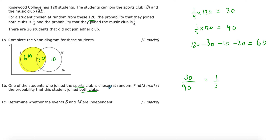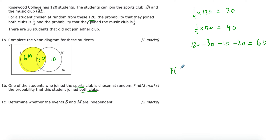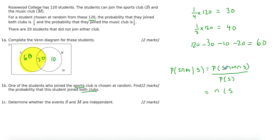So the probability is 30 divided by 90, which simplifies to a third. Another way to think about this is as a conditional probability, except they didn't use the word 'given.' For conditional probability: I want the probability that they are in both S and M, given that they're already in the sports club. The formula gives the intersection divided by the probability of S. For Venn diagrams, that's the number in the intersection of sports and music divided by the number in sports — 30 divided by 90.